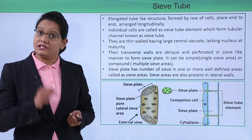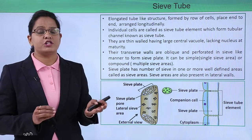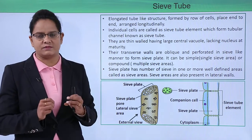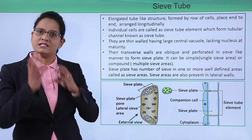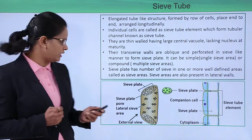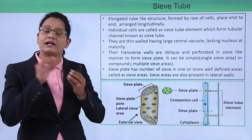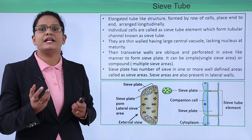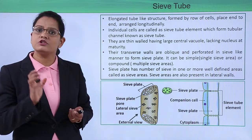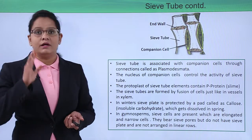In longitudinal section, you can see the sieve plate and the sieve tube element; the transverse wall is oblique. This sieve plate, like a perforation plate, can be simple — meaning a single sieve area is present — or it can be multiple, meaning many sieve areas have combined together. When pores are clumped together in an area, it forms a sieve area — this is also a characteristic feature.